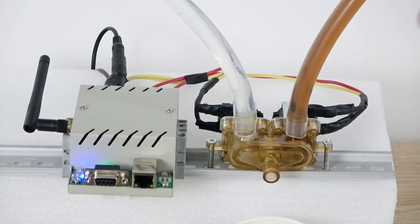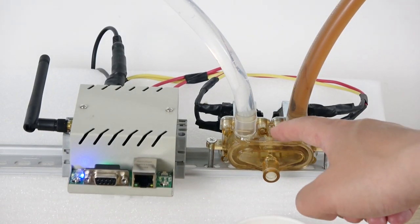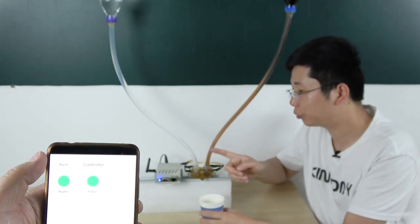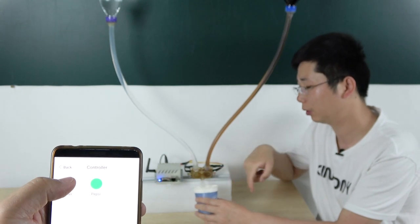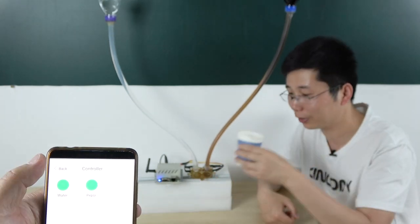You can see this is the water and this is the drink. It goes through this valve. Now I want to drink the water. I just press the key on the mobile phone. You can see this pipe. Okay, I can drink.